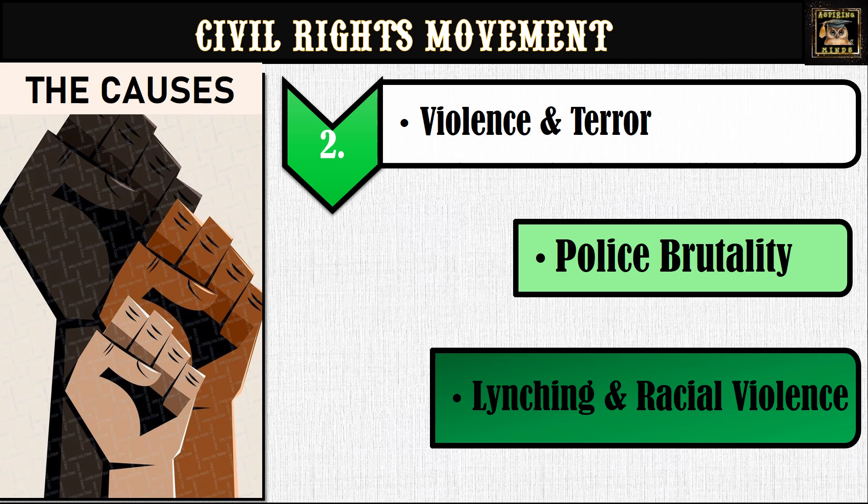Police brutality was another harsh reality for African Americans. Imagine living in a place where those who were supposed to protect you could also be the ones who hurt you the most. African Americans often faced brutal treatment from law enforcement, including beatings, false arrests, and even killings. There was little chance for justice because the legal system was rigged against them — complaints were ignored and perpetrators were rarely held accountable. This constant threat of violence from those in power reinforced the oppressive structures they were trying to fight against.